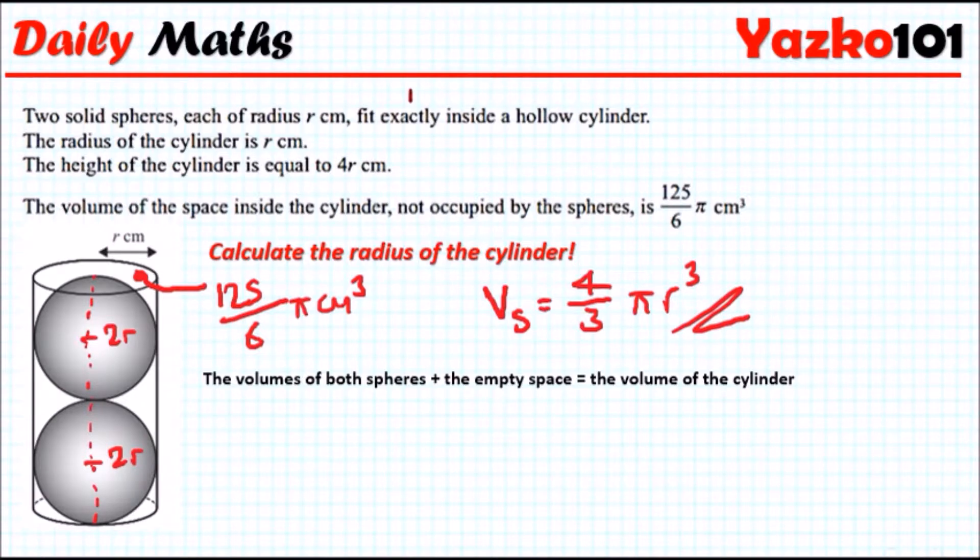So we can say 2 lots of 4 thirds π r cubed plus the empty space, which we already know is 125 over 6π. And this must equal the total volume of the cylinder.